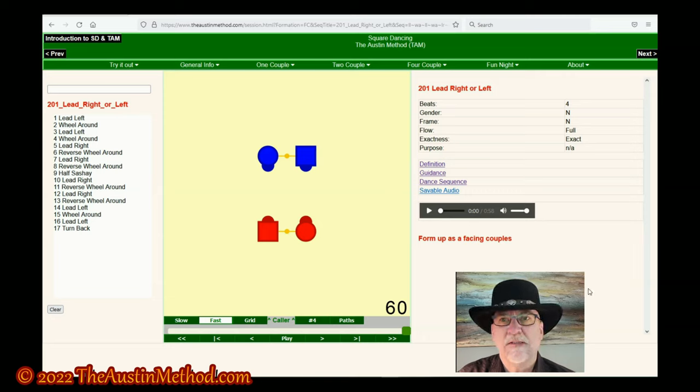Let's look at the stats. Technically, the number of beats is five, but as I mentioned, the caller will often give you one or two extra to make that decision about which way is right and which way is left. It is not gender specific.